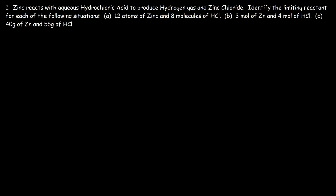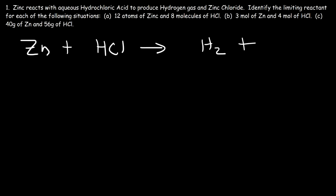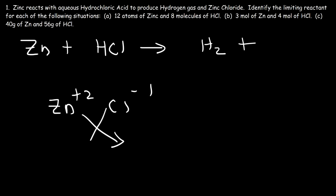Let's start by writing a balanced chemical reaction. We have zinc reacting with hydrochloric acid, HCl, and it produces hydrogen gas, which is diatomic, and zinc chloride. What is the chemical formula of zinc chloride? Zinc has a positive 2 charge; chloride has a minus 1 charge. Therefore, the chemical formula is going to be ZnCl2.